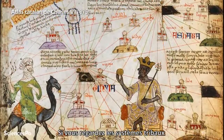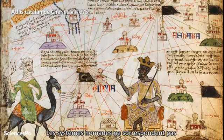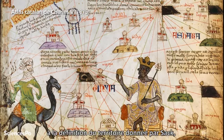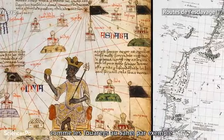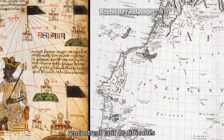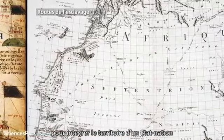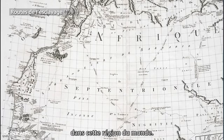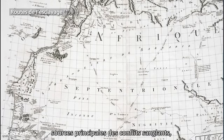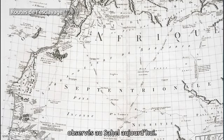If you take into account tribal systems and especially nomadic systems, nomadic systems do not fit to the exact definition of territory. And that's why some people in Africa, like the Tuaregs in the Sahel, meet so many difficulties for being integrated into the territorial nation-states of this region. This is probably one of the main roots of the bloody conflicts which are observed in the Sahel.